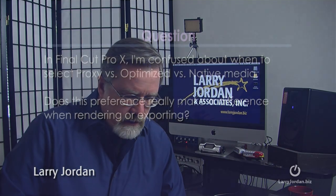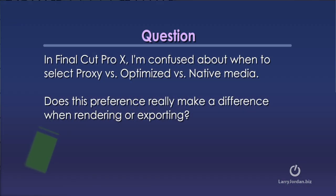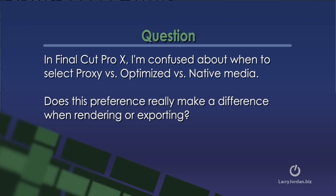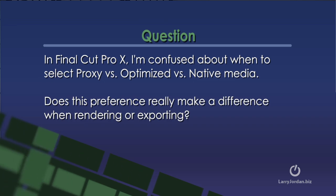I want to answer another question from a YouTube subscriber. Dan Davies asks: I've never understood why in Final Cut Pro 10 you have to switch playback mode from using proxy media to optimized or original media to ensure a video is rendered at the highest quality. It seems that given the setting is labeled playback, it shouldn't have anything to do with exported video.